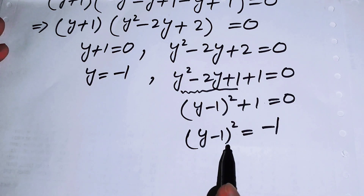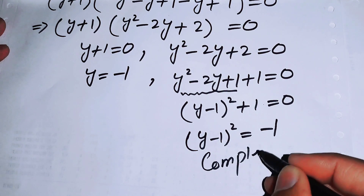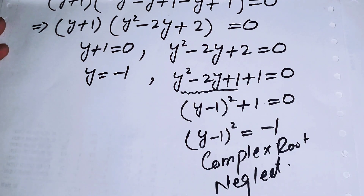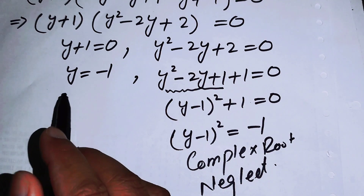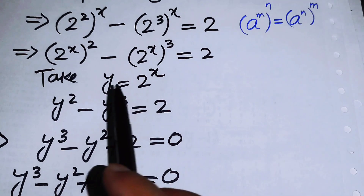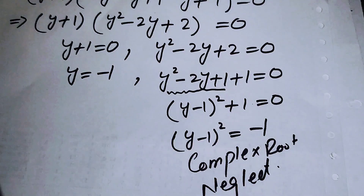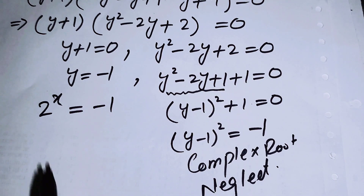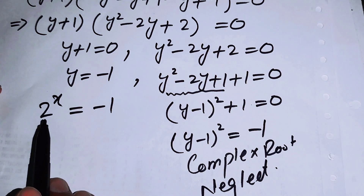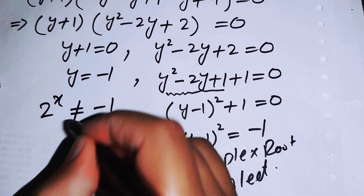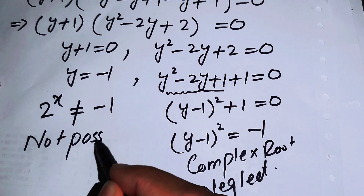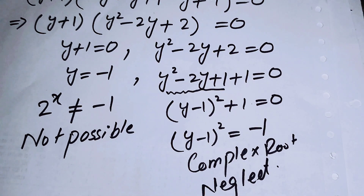Taking the square root of both sides in Case 2 gives imaginary or complex roots, so we neglect this case. For Case 1, y equals minus 1, but since y equals 2^x, an exponential function cannot be negative, so 2^x equals minus 1 is also not possible. Therefore, the given exponential equation has no real solution.